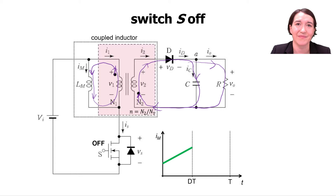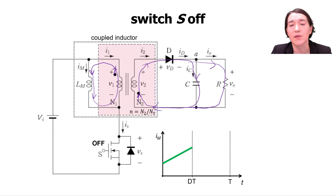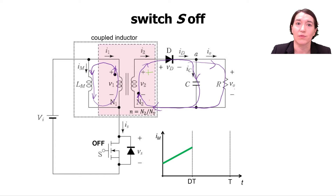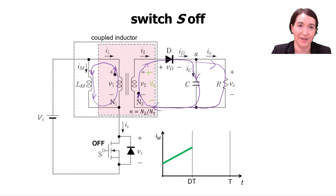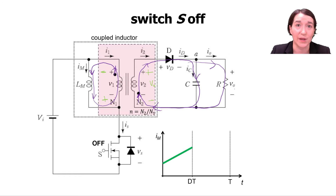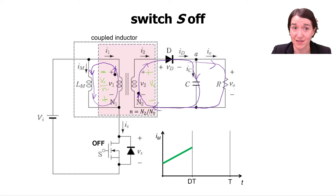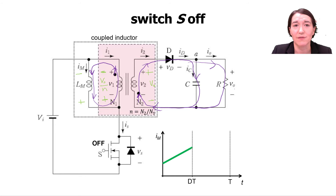During the off phase, the secondary side voltage equals Vout since the diode is on and assumed ideal. Following the dot convention, the primary side has flipped polarity relative to that, and the voltage is affected by the turns ratio, giving negative Vout divided by n across the magnetizing inductance. This negative voltage causes the magnetizing current to ramp down with a slope of negative Vout over n divided by L.